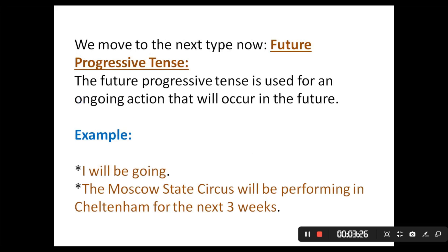Now we move to the next type, which is the future progressive tense. The future progressive tense is used for an ongoing action that will occur in the future. Examples: 'I will be going.' 'The Moscow State Circus will be performing in Cheltenham for the next three weeks.' As you can see, the act of going or performing can take a long time — it can take a very specific period of time.